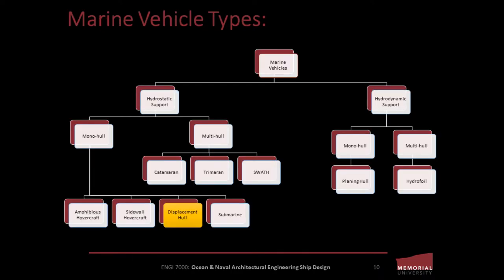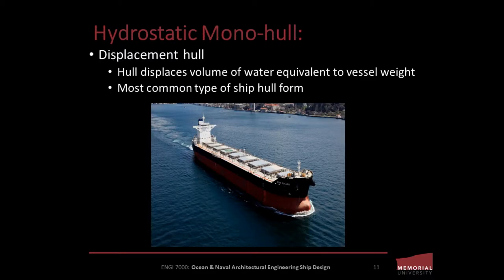Now let's consider the most ubiquitous class of ship out there, the displacement hull. A hull is simply the watertight body of a ship or boat. The hull may open at the top, such as a canoe, rowboat, or dinghy, but in ship design, particularly the large ships we're concerned with in this course, the hull may be fully or partially covered with a deck. Atop the deck, there may be a deckhouse or other superstructure, such as funnel, derrick, or mast. The hull displaces a volume of water equivalent to the weight of the vessel to maintain its equilibrium in the water. Displacement hulls represent the majority of designs that come to mind when most of us hear the word ship.